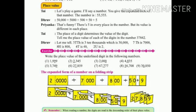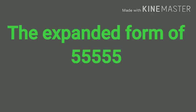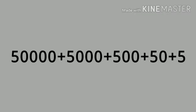Now we shall learn the place value of a digit in a number. So let's play a game. I shall say a number, then you give the expanded form of that number. The number is 55,555. The expanded form of this number is 50,000 plus 5,000 plus 500 plus 50 plus 5. That's funny — there is 5 in every place in the number.